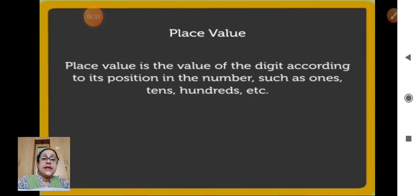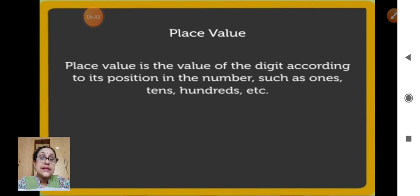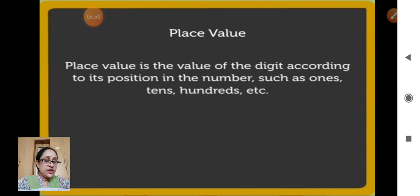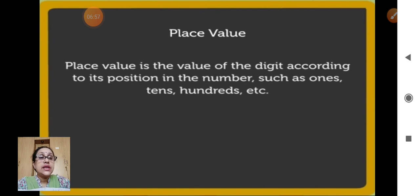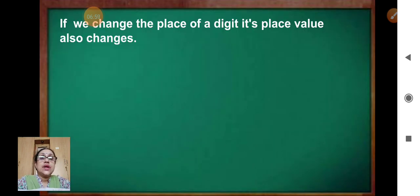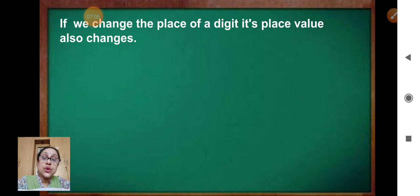Now, place value. Place value is the value of the digit according to its position in the number, such as 1's, 10's, 100's, etc. In place value, we have to find out which place the digit is in. If we change the place of a digit, its place value also changes.